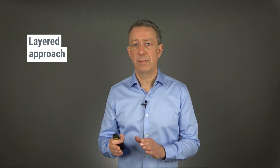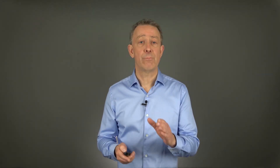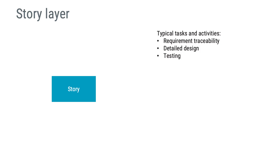I suggest looking at four layers: story, increment, release, and project. A story contains actionable work, also known as work items. It is reasonable to establish evidence of design, requirement traceability, and testing relating to the story. You could also consider integration and system testing, but saving this for the next layer might be more convenient.